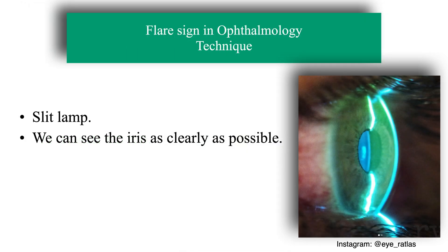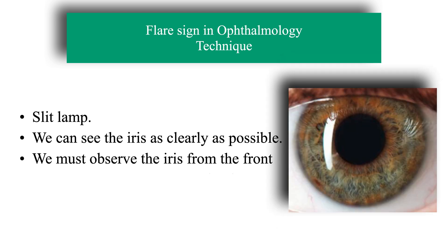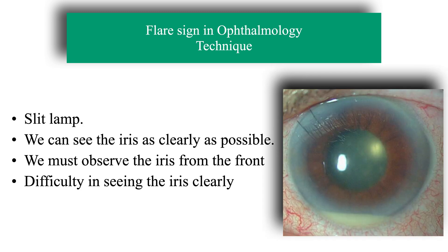How are we going to measure the flare sign? We will do it with the slit lamp and we will look for the best lighting with which we can see the iris as clearly as possible. We must observe the iris from the front, as we see in the photograph on the right, following the optical axis. We will measure the difficulty that we find in seeing the iris clearly.